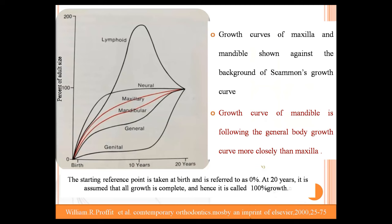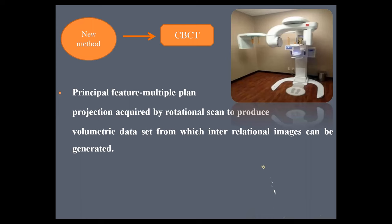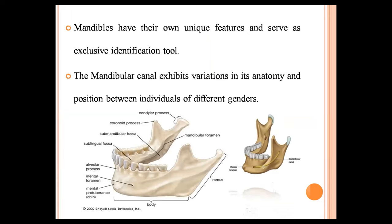Male and female sexes have their own unique features for gender determination, which serve as exclusive identification tools. The mandibular canal exhibits variations in its anatomy and position between individuals of the same gender.